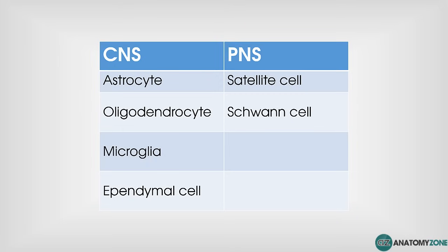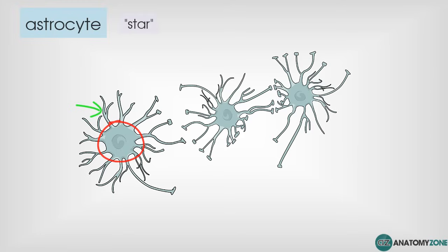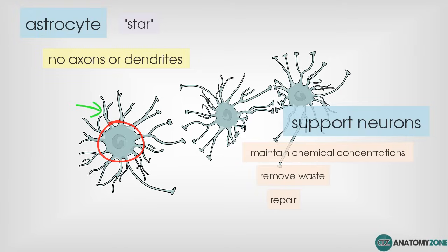First we'll take a look at the astrocyte. Immediately striking is the shape — it's got a central body with projections out from it, giving it a star shape. The word astrocyte comes from the Greek 'astron,' meaning star. These extensions from the cell body are not axons or dendrites, they're simply extensions. The function of the astrocyte is purely supportive: it helps maintain chemical concentrations in the extracellular space, is involved in removing waste, and has some reparative functions so it can react to tissue damage.